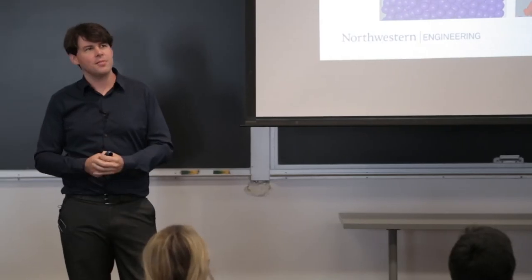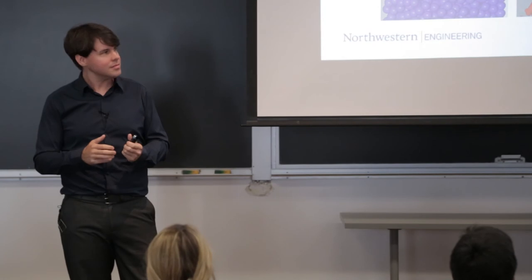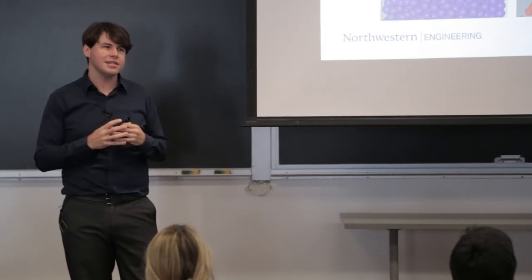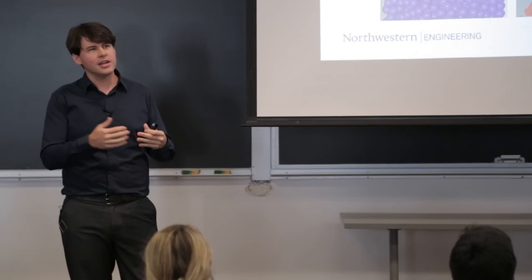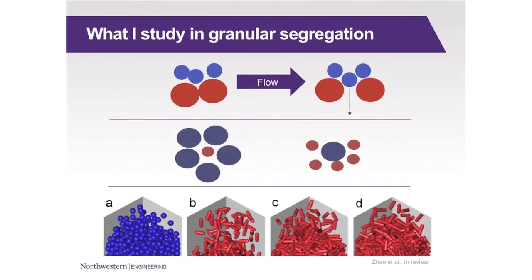And then if you remember at the very beginning, I mentioned that most of the time we simplify these systems where we're looking at spheres because they're a little bit easier to handle. I'm trying to take a step away from that and look at non-spherical particles. So they're still all the same shape, but now I'm looking at things like rods and cylinders and other shapes, trying to understand how shape affects segregation.